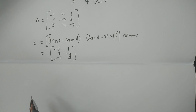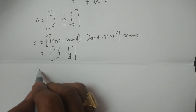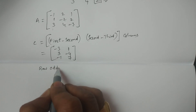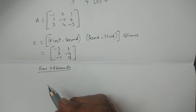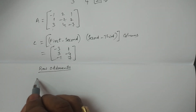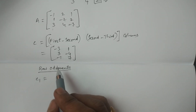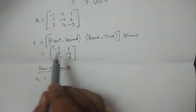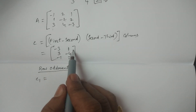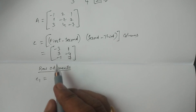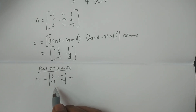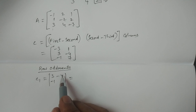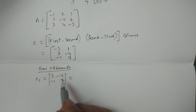Then you have to calculate row oddments from this column matrix. The row oddments are calculated by taking determinants. For c1, delete the first row — remaining values are minus three, one, minus one, seven — calculate the determinant: three times seven minus of minus four times minus one equals twenty-one minus four equals 17.